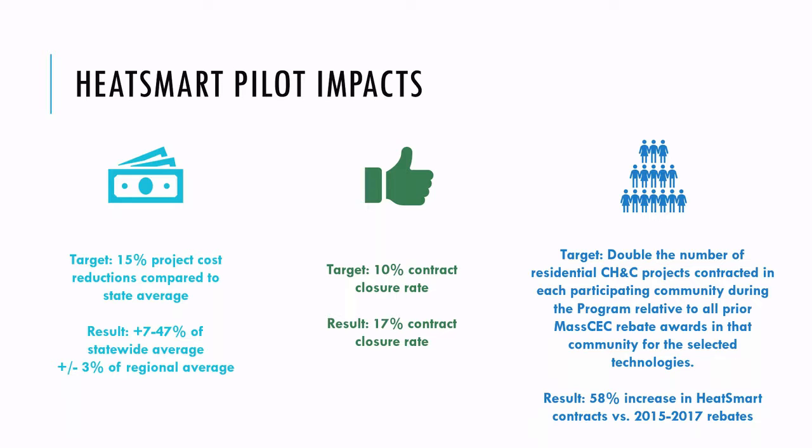On program metrics: we targeted 15% project cost reductions compared to state averages, similar to what Solarized Mass achieved. However, our projects were 7 to 47% above statewide average depending on technology and town — roughly at regional average. We didn't achieve cost reductions, but people still went forward for other reasons. We targeted a 10% contract closure rate and hit 17%, on par with Solarize campaigns and what we've heard as the HVAC industry average.